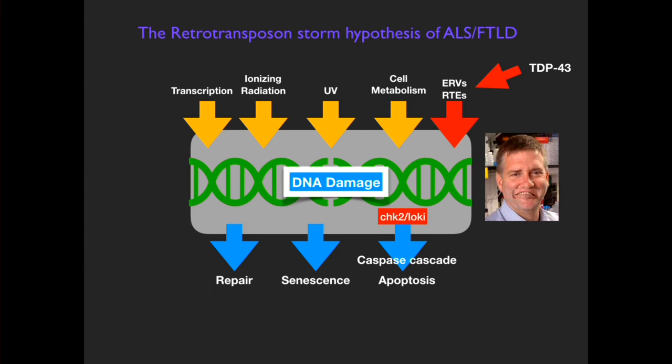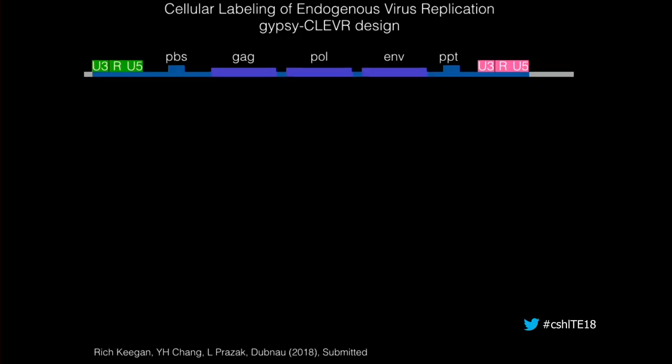If DNA damage is being caused by GYPSY, we should see evidence that GYPSY is fully replicating, we should be able to see DNA damage, and we should be able to see activation of the caspase cascade leading to cell death. To test this, we had to design a reporter — we call it Cellular Labeling of Endogenous Virus Replication, or CLEVER.